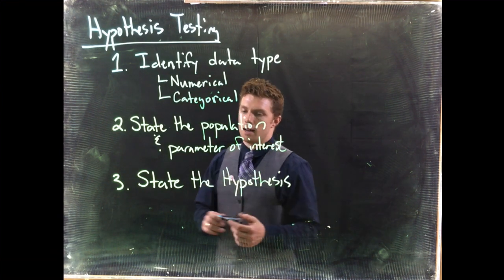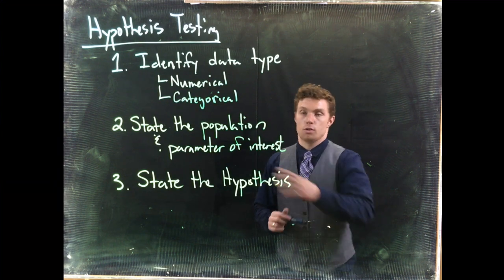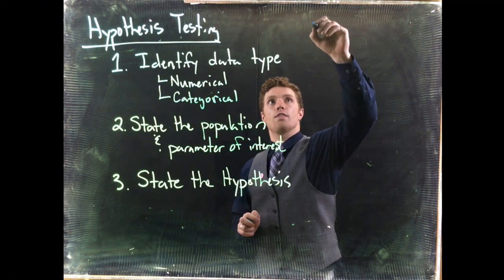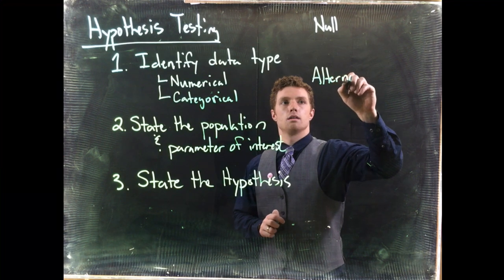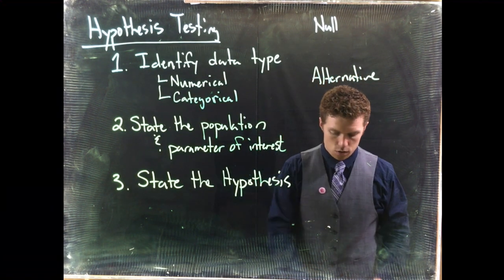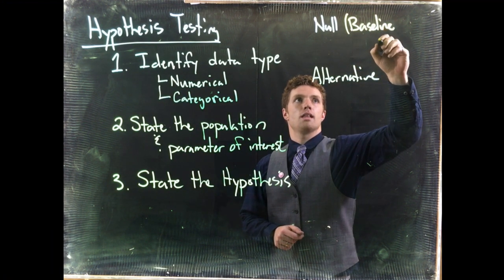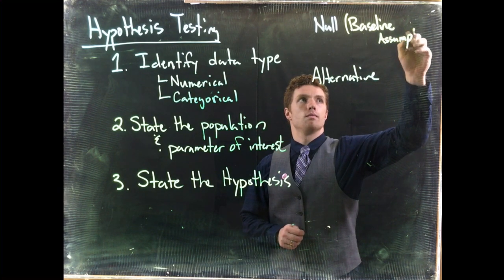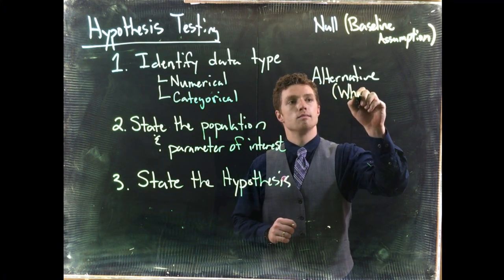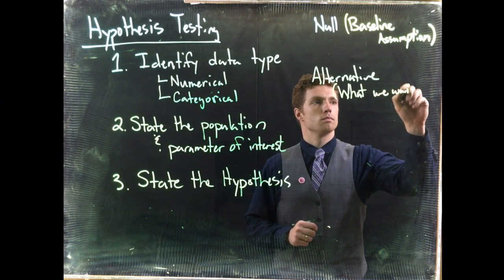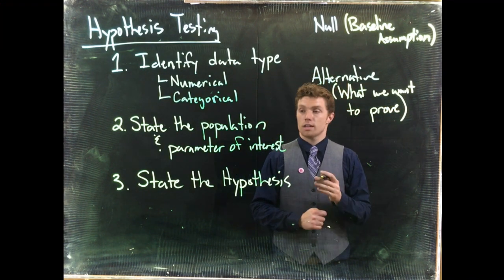When we have our hypotheses, we actually have two: the null hypothesis and the alternative hypothesis. The null hypothesis is our baseline assumption, and the alternative hypothesis is what we want to prove.